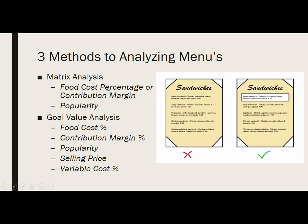The perfect menu item is popular, brings a lot of profit, and has a low food cost percentage — so you're selling a lot of it. These are typically the items that restaurants call their house specialties. When you go to a restaurant, many house specialties are highlighted not only because they're really well done, but often because they're one of these great items.